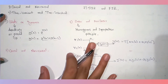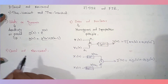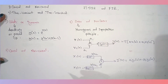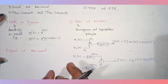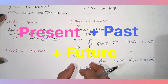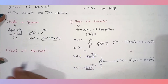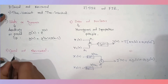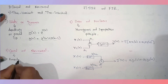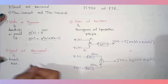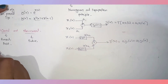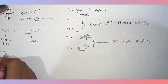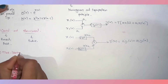For causal and non-causal systems, the same principle applies as with signals. If a system depends on present and past inputs it is causal. If it also depends on future inputs, even while depending on present and past, then the system is non-causal.